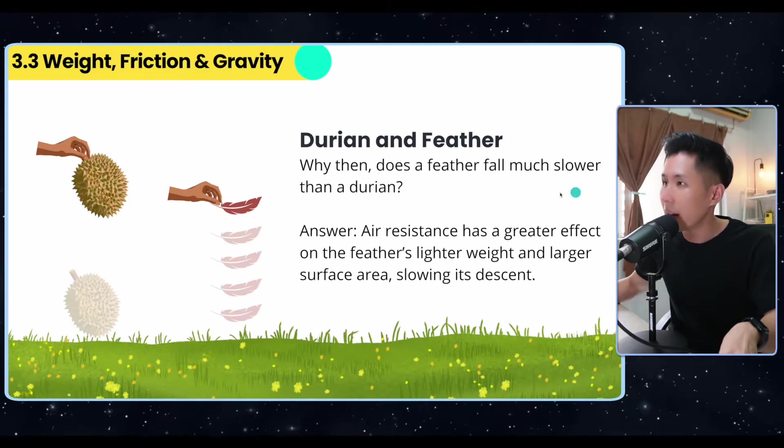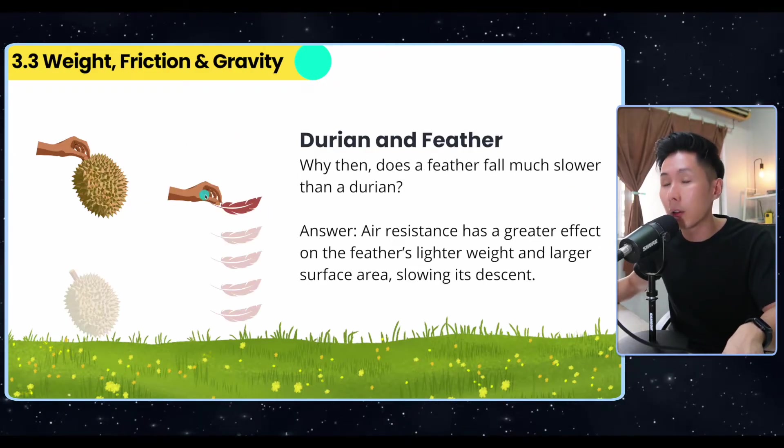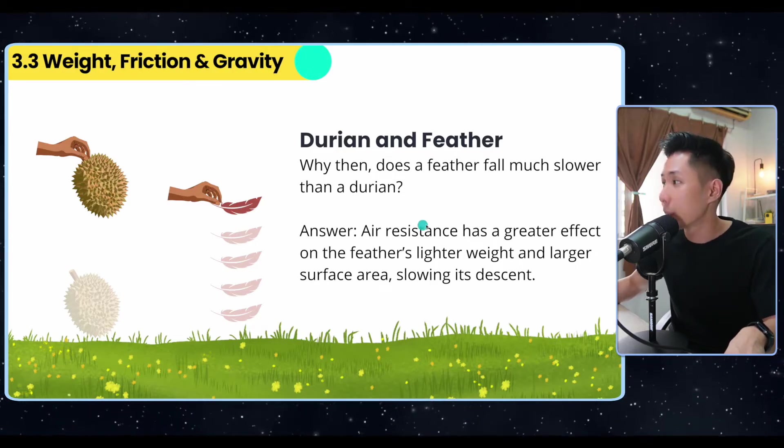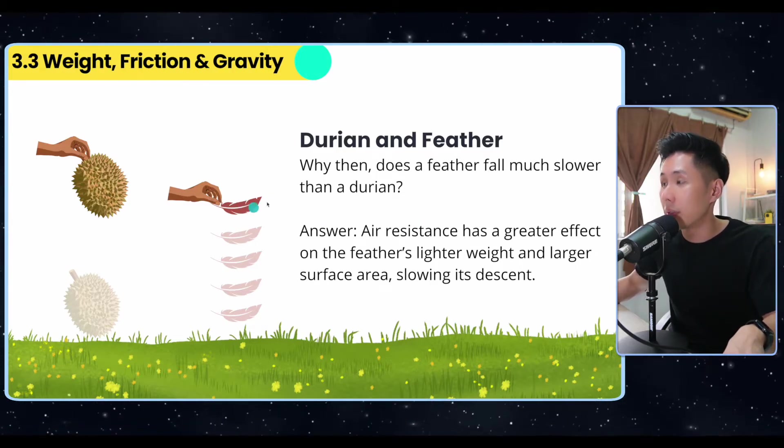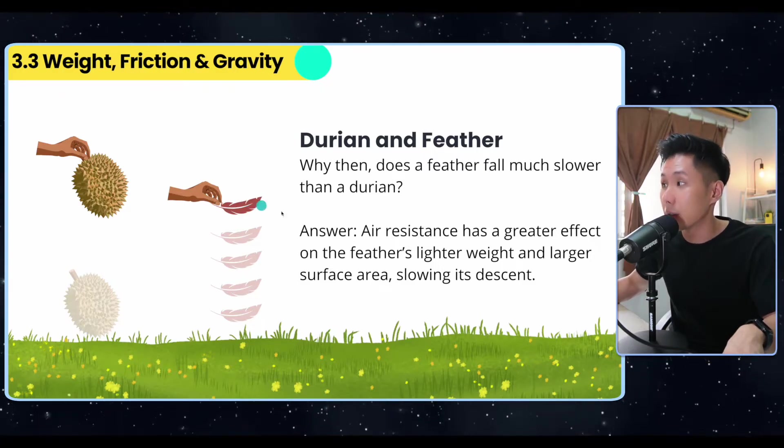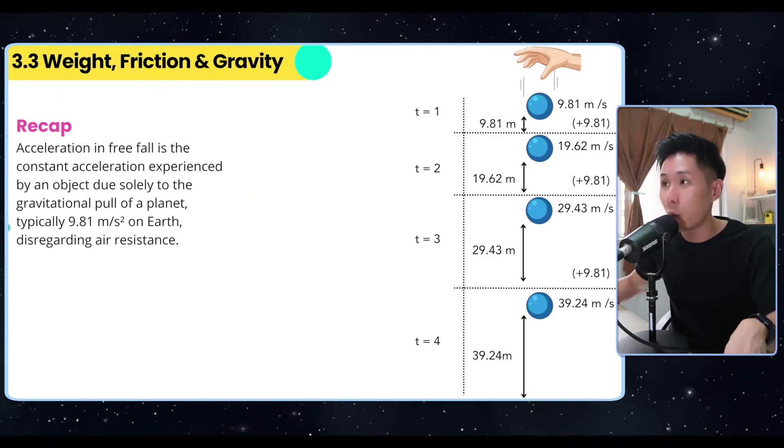Gravity accelerates all objects equally regardless of their mass. At this point you might be wondering, but we do have some objects that fall at a different rate. Why does a feather drop slower? That's because of air resistance. Because of the surface area of this feather which is bigger, it causes the feather to slow down.